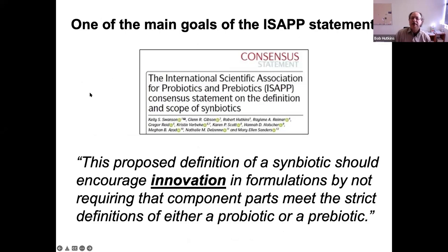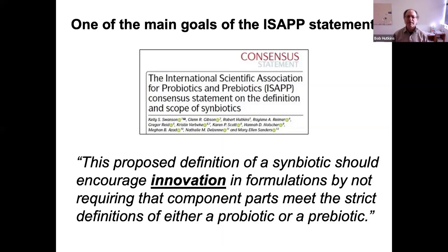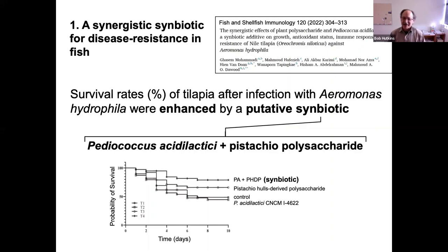One of the main goals of the ISAP statement was this notion of innovation. A quote from the paper: 'The proposed definition of a symbiotic should encourage innovation in formulations by not requiring the component parts meet the strict definitions of either probiotic or prebiotic.' That's why we say the microbe and the substrate. Kelly did talk about pet foods, and symbiotics, probiotics, prebiotics, and symbiotics have been used in fish.